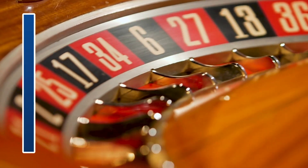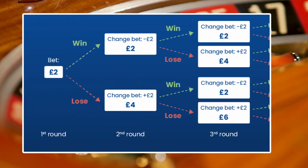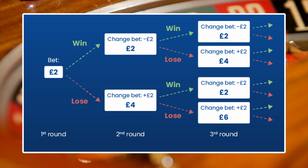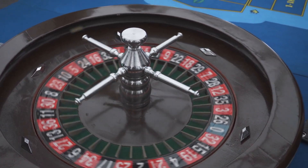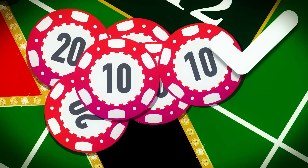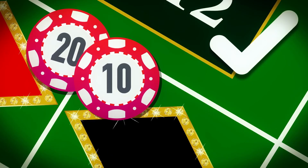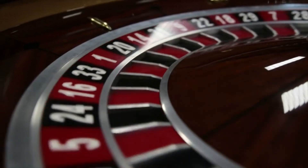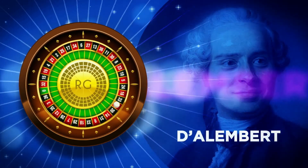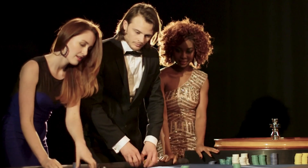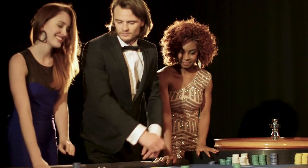The Dolanbert roulette strategy offers a structured and logical approach to navigating the game's inherent uncertainties. While it cannot guarantee long-term success against the house edge, it provides a methodical framework for managing bets and potentially recovering losses. Whether you're a seasoned roulette enthusiast or a newcomer to the game, understanding the nuances of the Dolanbert system can be a valuable addition to your repertoire.